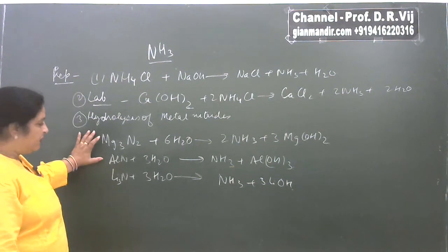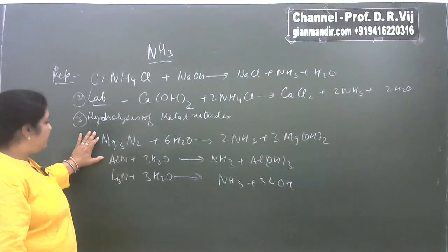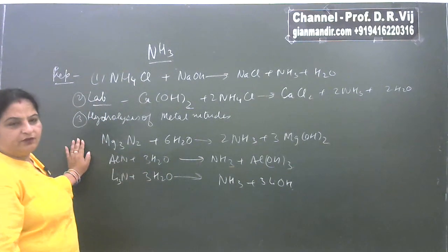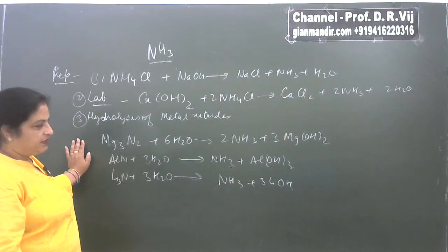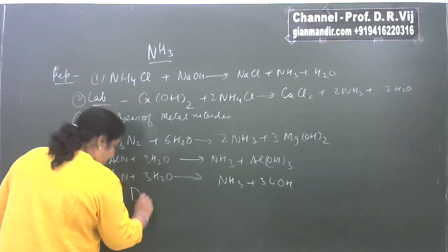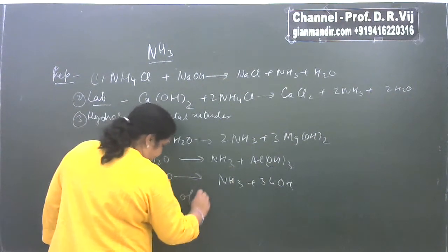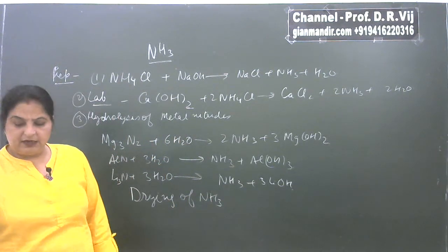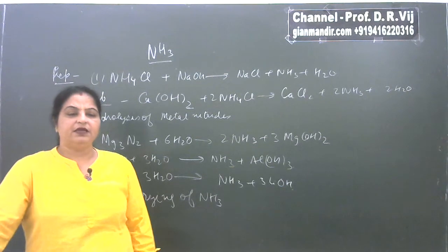An important point: when we carry out hydrolysis of these nitrides, the ammonia obtained also contains water vapors. So if you need dry ammonia gas, the water vapors should be removed. When we talk about drying of ammonia, to dehydrate any gas, we pass the gas over a dehydrating agent.